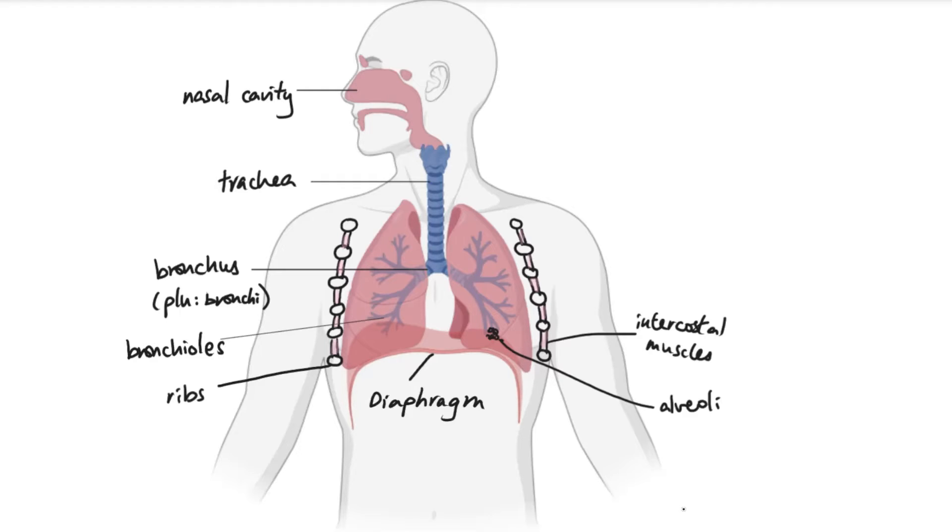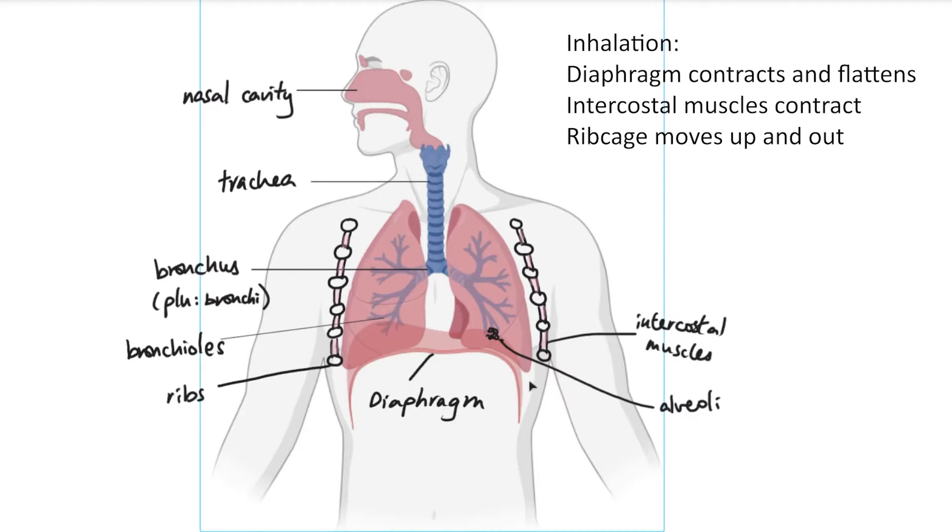In terms of the process itself, in terms of inhalation, what will happen is that to start with, the diaphragm, which is the muscle, will contract and goes down and flattens, and the intercostal muscles contract to pull the rib cage up and out. That increases the chest volume, which decreases the pressure. So that's lower than the atmospheric pressure. So the air flows in down the pressure gradient.